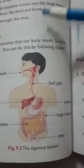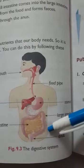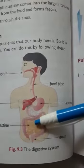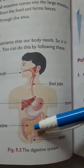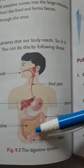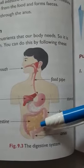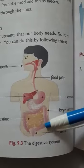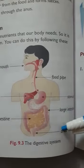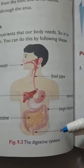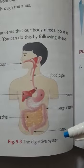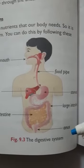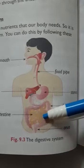From the stomach, food enters the small intestine where the process of digestion gets completed. The small intestine produces a digestive juice, and the digestive juices from the liver and the pancreas mix with it. This causes further breakdown of food, and the food breaks down into nutrients.